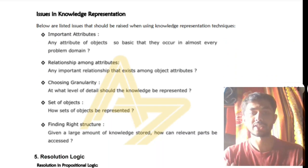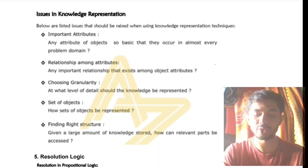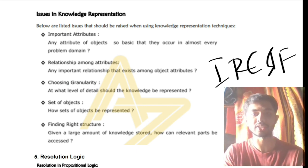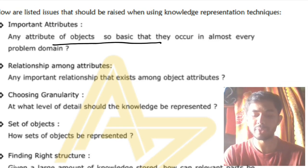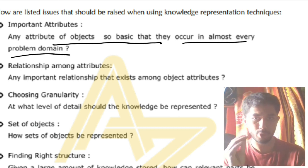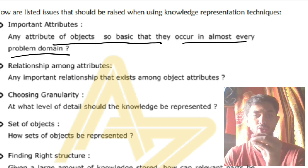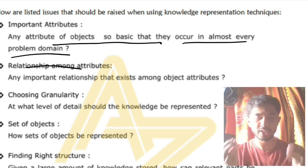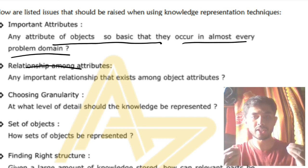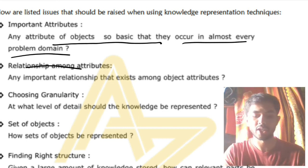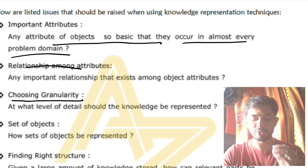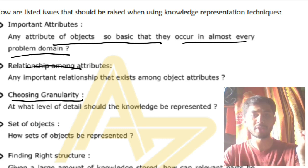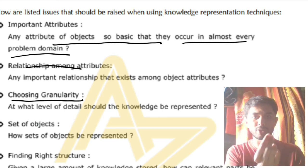The second part covers issues in knowledge representation. Remember the mnemonic IRCSF. I — important attributes: any attribute so basic that it occurs in almost every problem in the domain. R — relationships among attributes: when two objects have many attributes, finding which relationships among them are most important. C — choosing granularity: representing knowledge at the right level of detail depending on context.